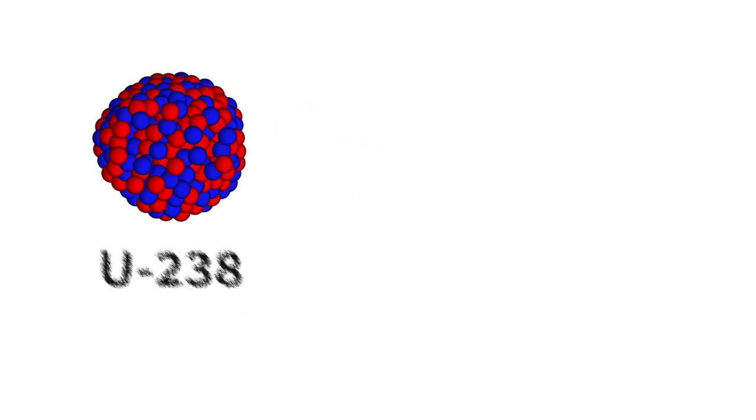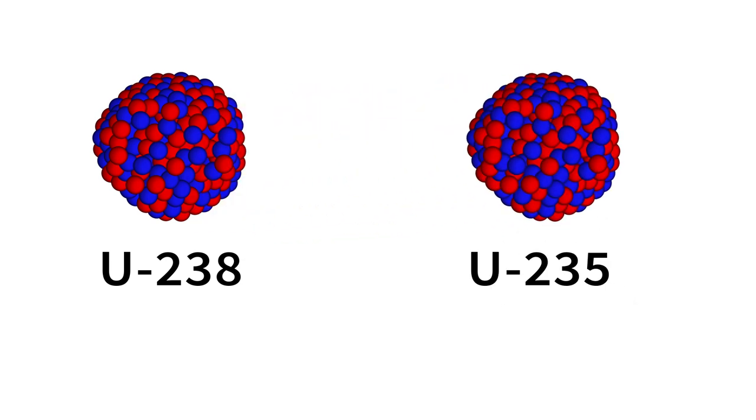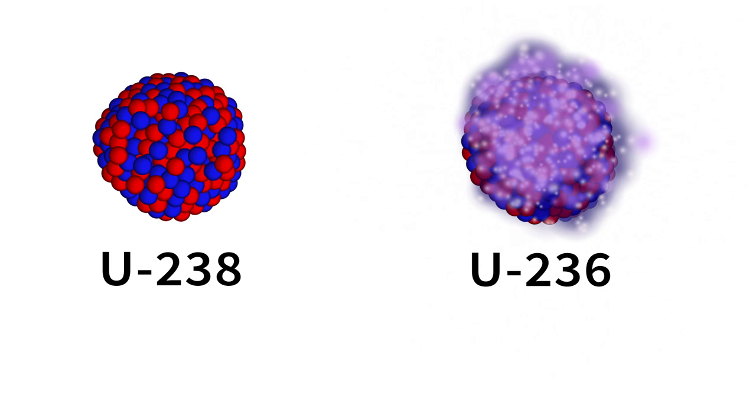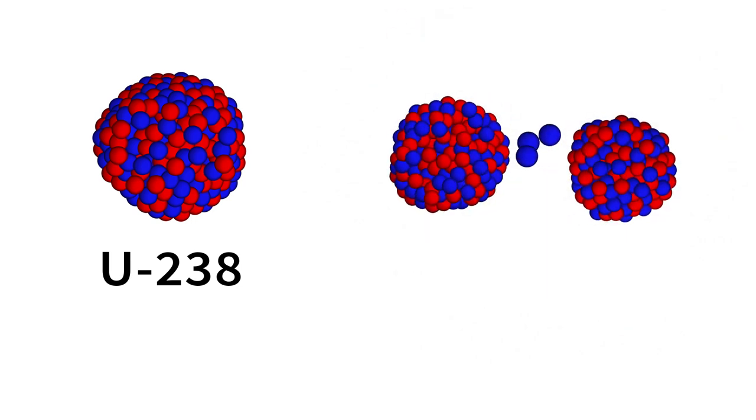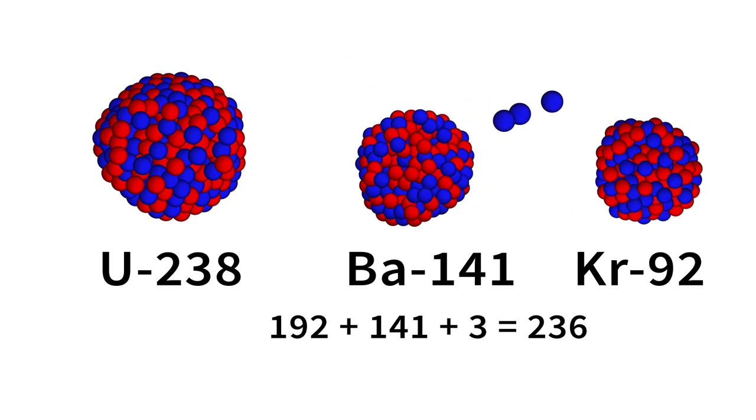Uranium is a naturally occurring element. Most uranium exists as the relatively stable isotope uranium-238, but about 1% is uranium-235. Uranium-238 is stable, but uranium-235 is both radioactive and fissile. When it is hit by a neutron, it will briefly become uranium-236, which is highly unstable and will immediately split into two new elements, such as krypton-92 and barium-141, releasing three additional neutrons along the way.